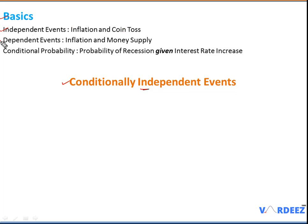The other type is dependent events. Take inflation and money supply. If in a particular economy the money supply is increased, then there is a high probability that inflation will also go up. And if money supply is decreased, there is a chance that inflation will come down. So money supply does have an effect on inflation, meaning event A and event B are dependent upon each other.